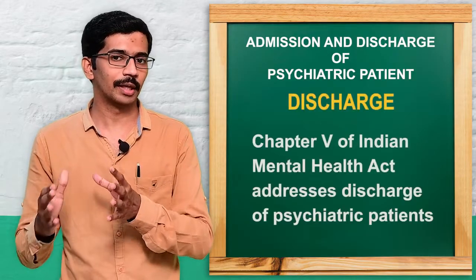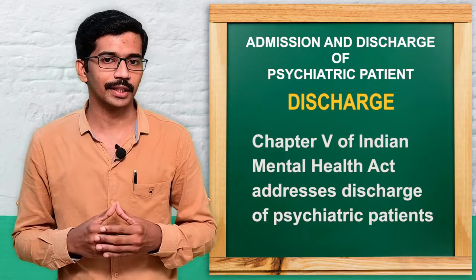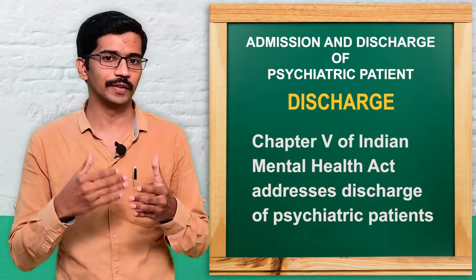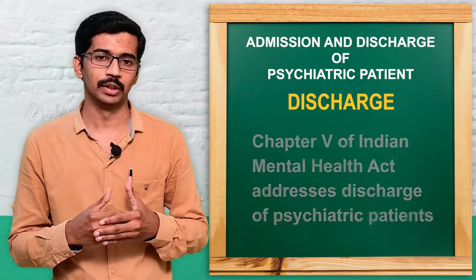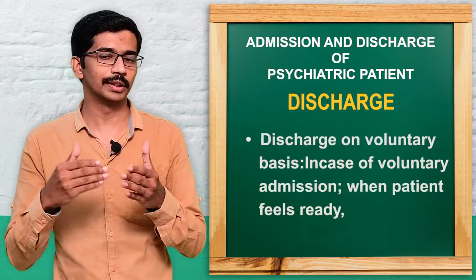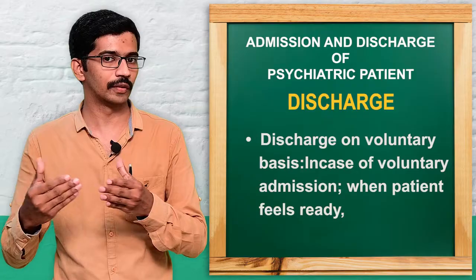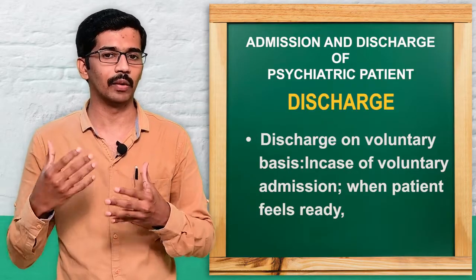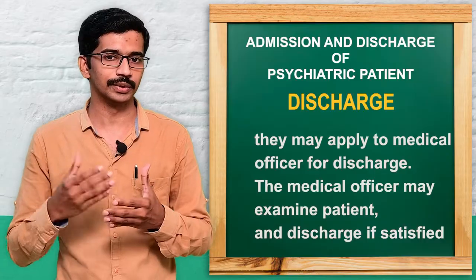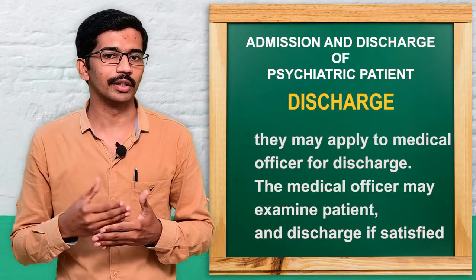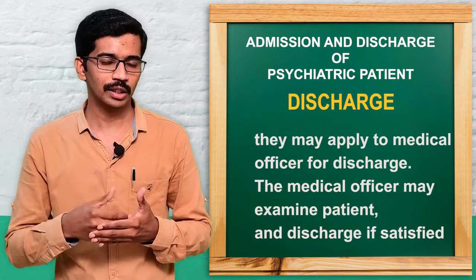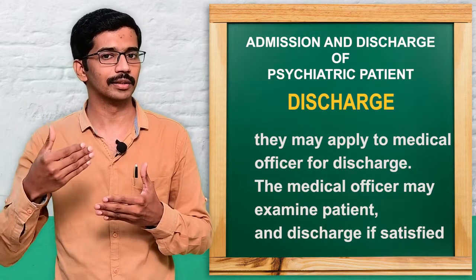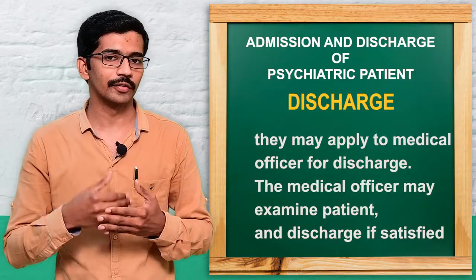Chapter 5 covers the discharge of a psychiatric patient. For voluntary admission, discharge is on a voluntary basis — when the patient feels their condition has improved and the problem has reduced, the patient can give a request to the medical officer. The medical officer will examine the patient and if satisfied, will give an order for discharge.